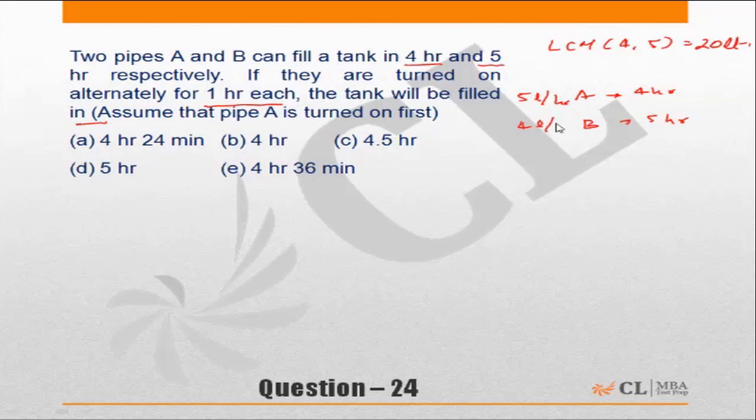If the volume of the tank is 20 liters, that means A will do 5 liters per hour and B does 4 liters per hour. If they are turned on alternately for 1 hour each, in every block of 2 hours they will be doing 9 liters.